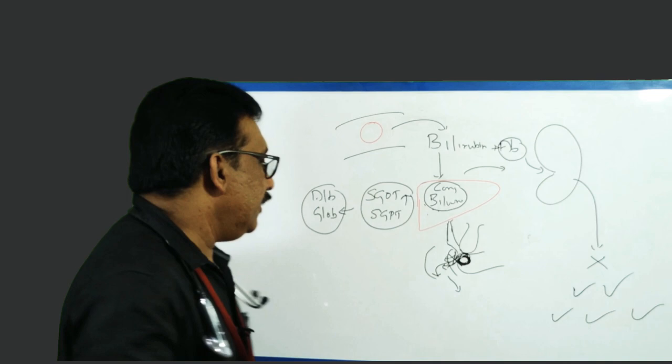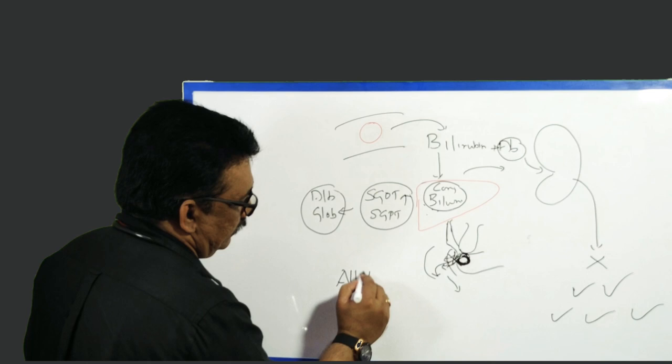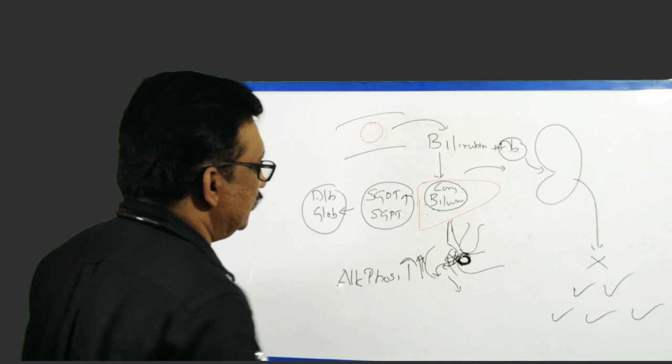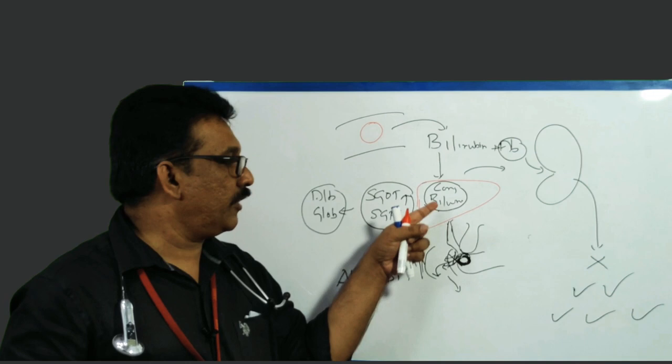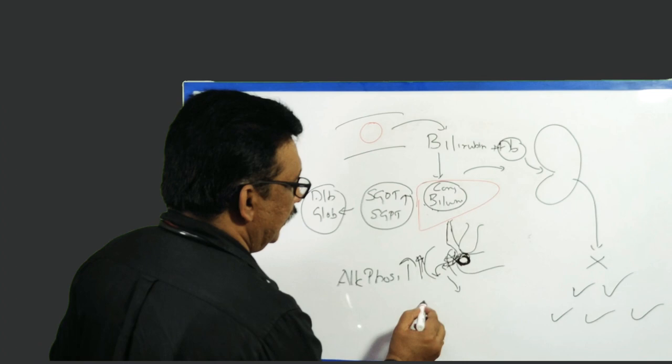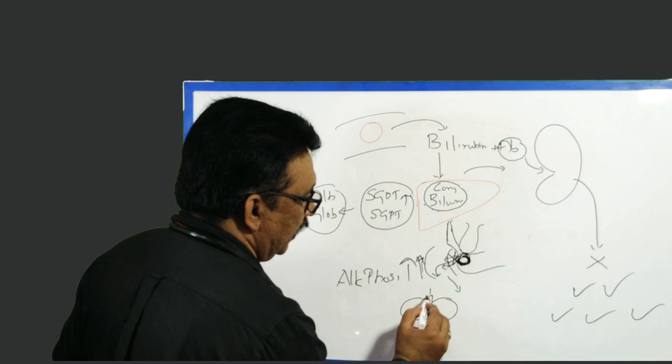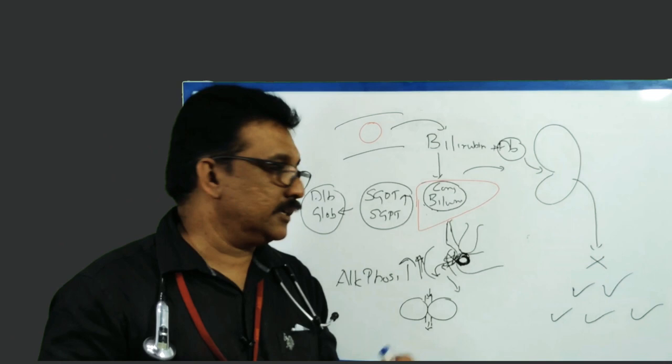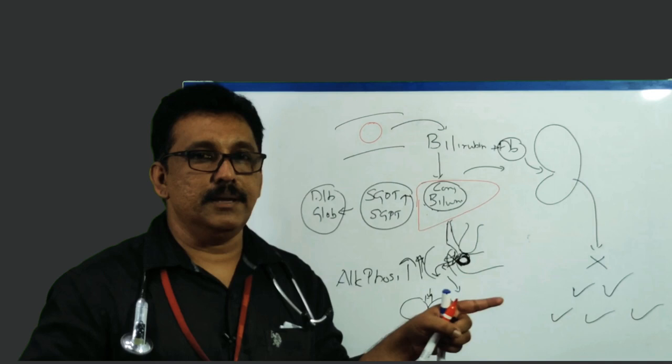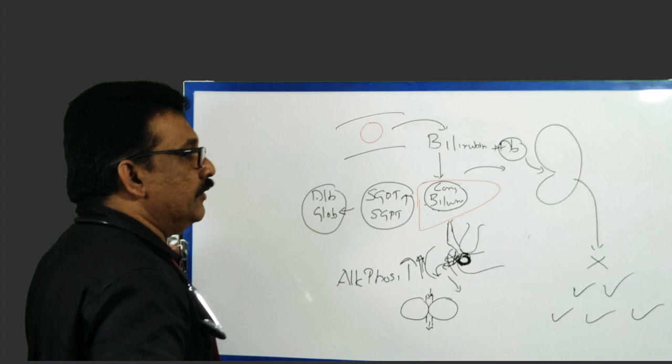The patient can have severe itching, bradycardia, normal liver enzymes, normal albumin/globulin ratio, and highly colored urine. One very important investigation is alkaline phosphatase — it is highly elevated in obstructive jaundice. Remember it can also be elevated in the obstructive phase of hepatic jaundice, because in acute hepatitis swollen liver cells can obstruct bile canaliculi. But in obstructive jaundice, the elevation is very prominent.